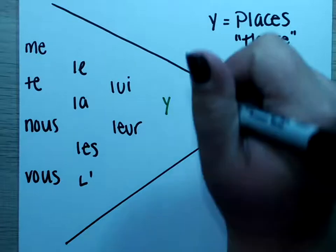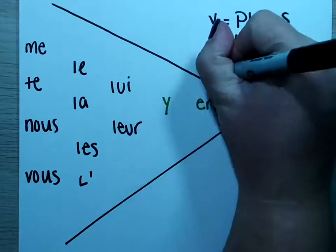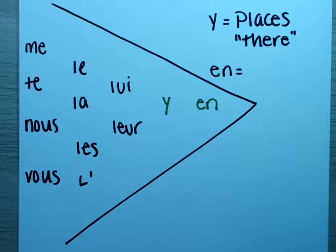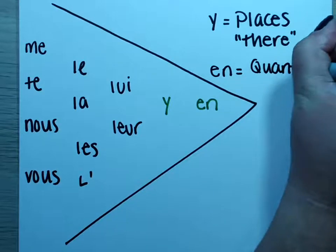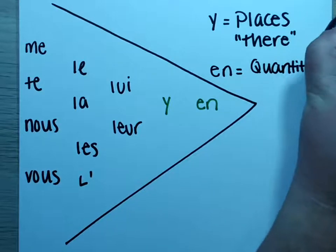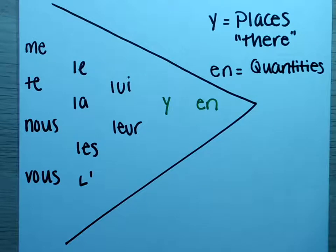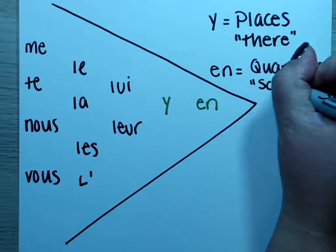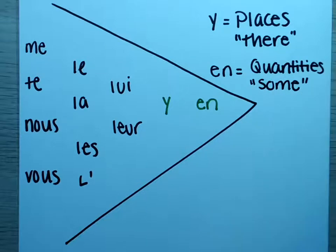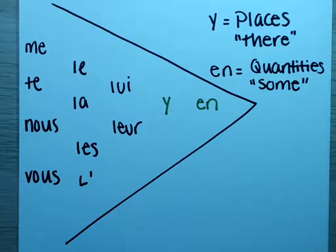Our last one is en. En is used with quantities. In a sentence, instead of saying 'I had bought quantities of something,' we would say 'I had bought some of it.' So our pronouns: y means 'there' and en means 'some.'